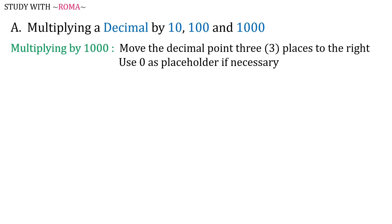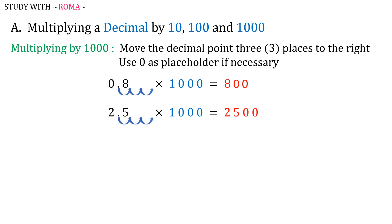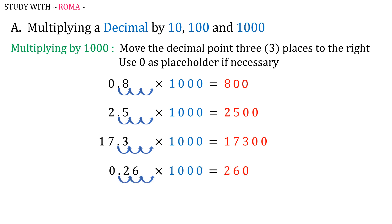When multiplying a decimal by 1000, move the decimal point three places to the right, and use 0 as a placeholder if necessary. For example: 0.8 times 1000 is equal to 800; 2.5 times 1000 is equal to 2500; 17.3 times 1000 is equal to 17300; 0.26 times 1000 is equal to 260; and 4.28 times 1000 is equal to 4,280.